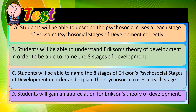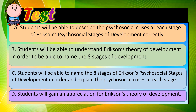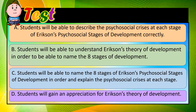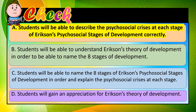Option C: Students will be able to name the eight stages of Erikson's theory of development in order to explain the psychosocial crisis at each stage. Option D: Students will gain an appreciation for Erikson's theory of development. If you selected option A, you are correct.